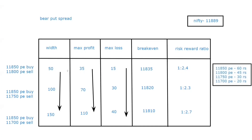This means that if you increase the width of the spread, you have the opportunity to gain higher profits but with the risk of losing more money — the more you put in, the more you can get. Now, the second important thing to look at is the break-even. The break-even of a 50-point width was 11,835. In a 100-point width, the break-even goes even lower to 11,820.